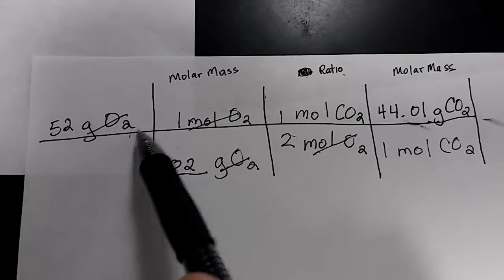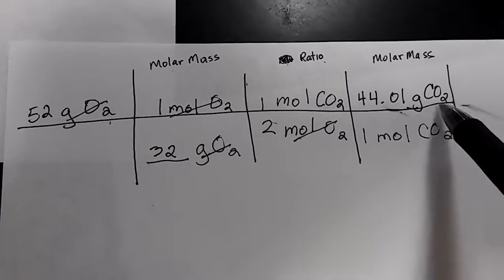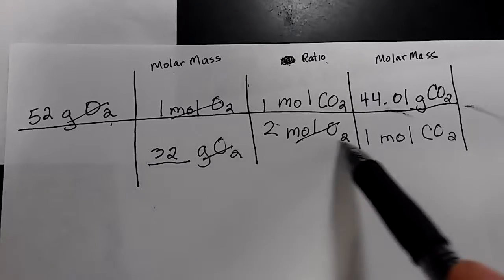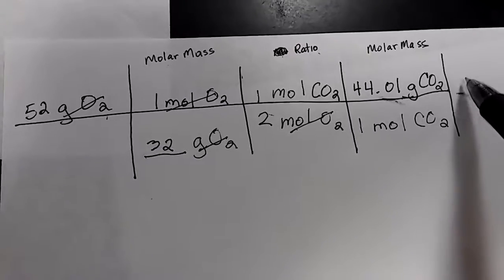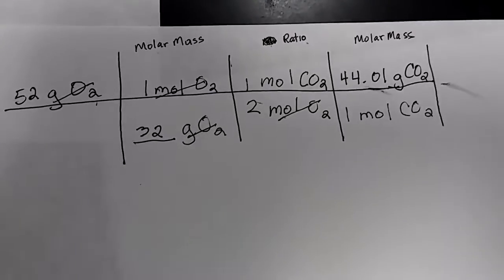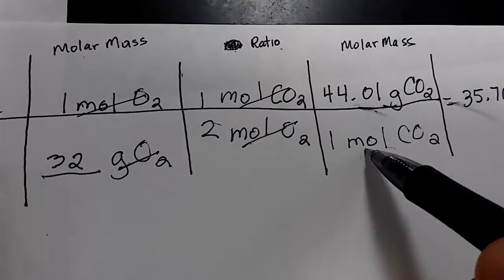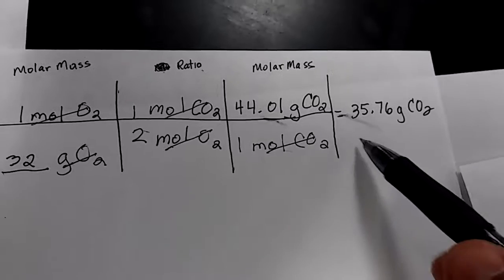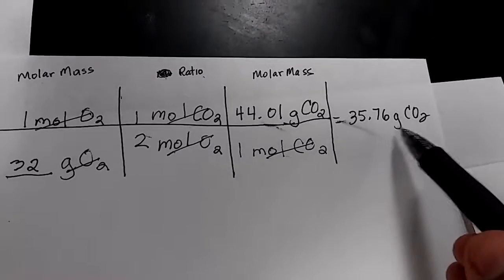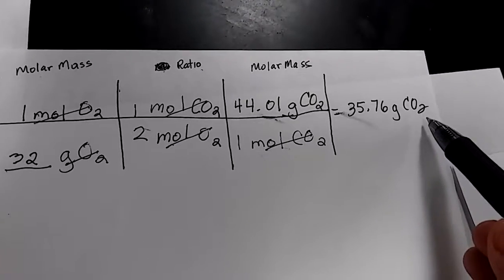As before, you're going to go ahead and multiply the top numbers, multiply all the bottom numbers across, and then the top answer divided by the bottom answer. You're not going to forget to go ahead and cancel the moles of CO2. And you're left with 35.76 grams of CO2 as your answer.